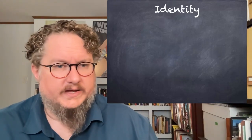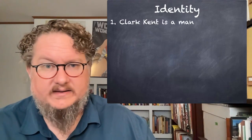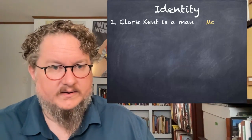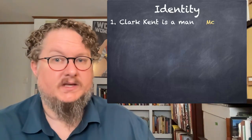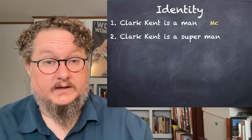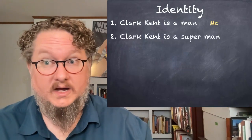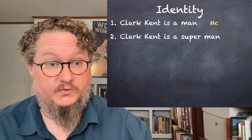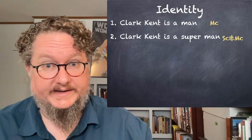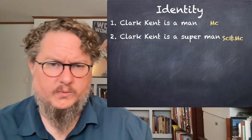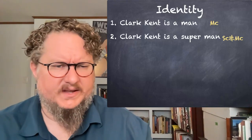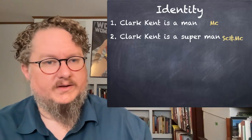First, we can look at some normal sentences that don't need identity. 'Clark Kent is a man' — we can just use a simple atomic expression, where capital M is the predicate 'man' and lowercase c stands for Clark Kent as a constant. 'Clark Kent is a superman' could be represented with two predicates, super and man, or one predicate referring to a superman.